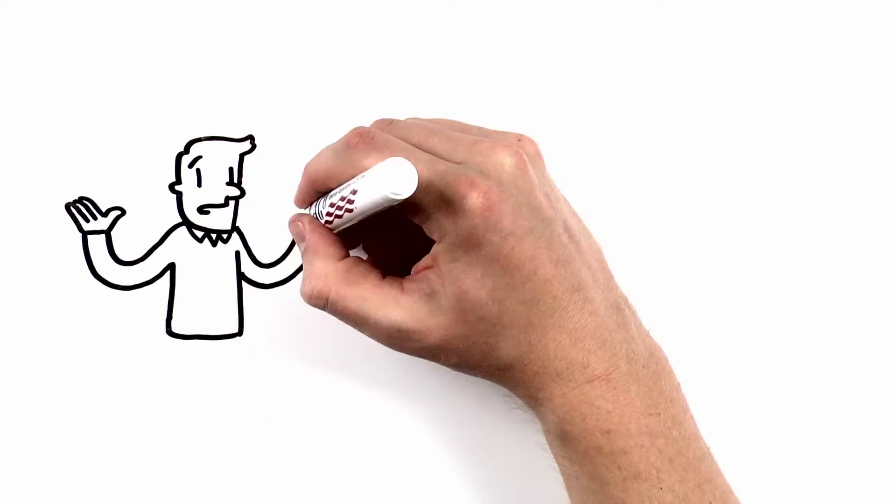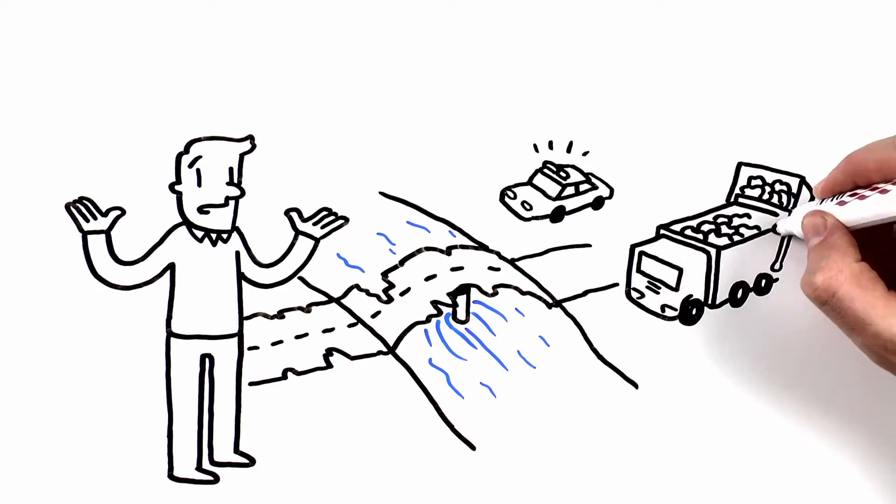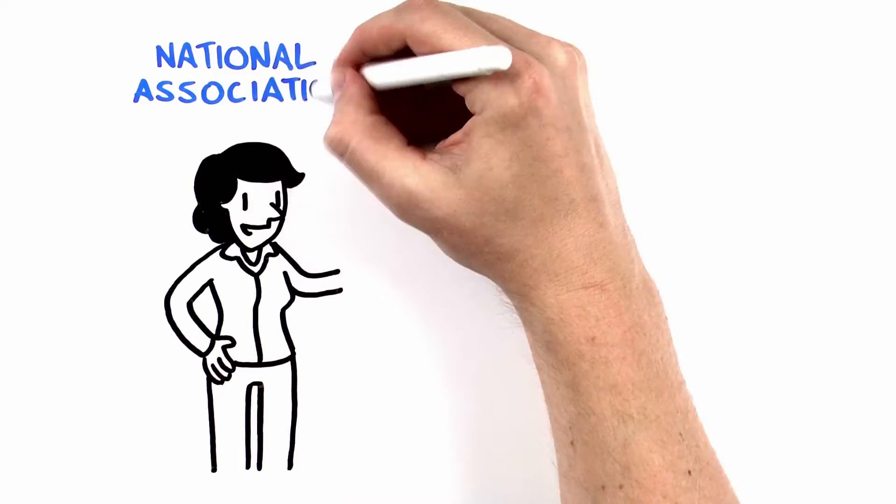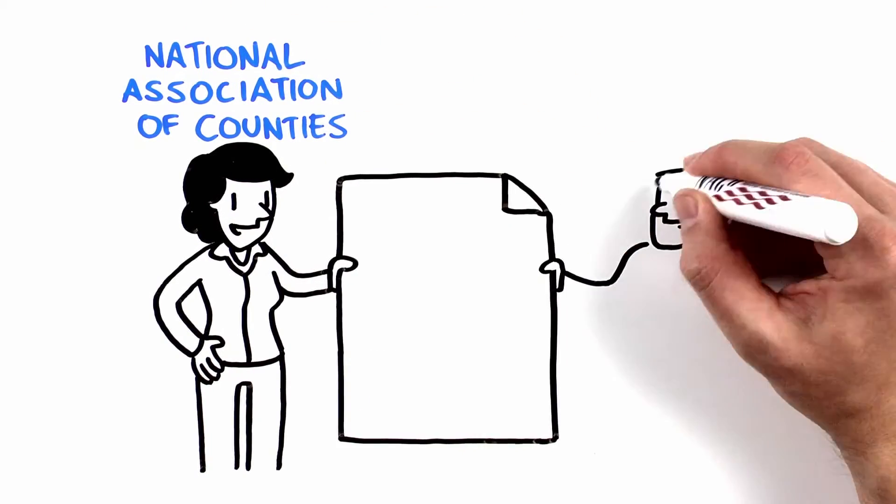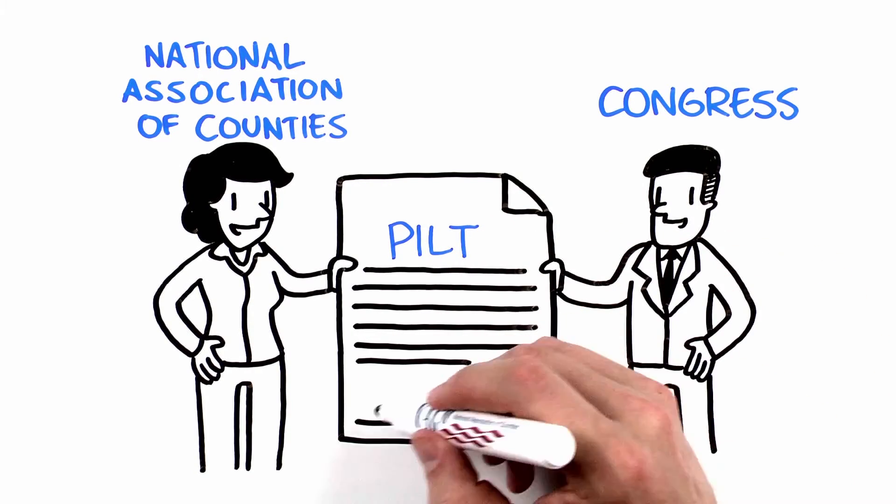Without PILT, counties across the country would be unable to provide vital services. Members of the National Association of Counties continue to call on Congress and the Administration to provide full mandatory funding for PILT.